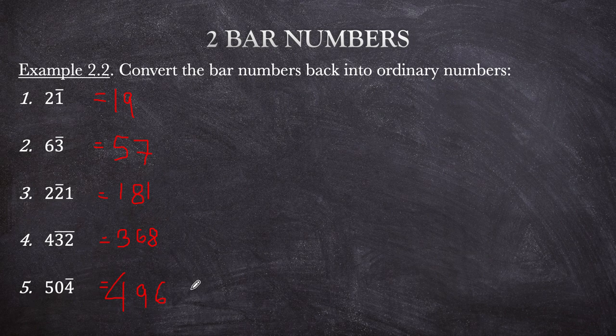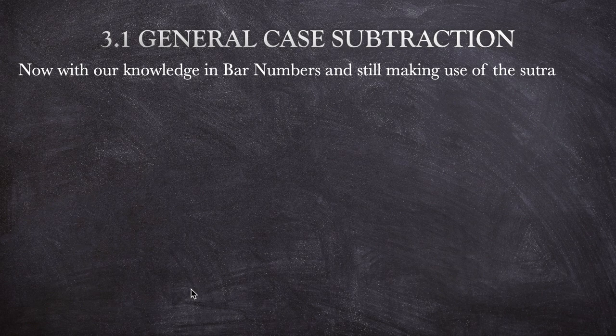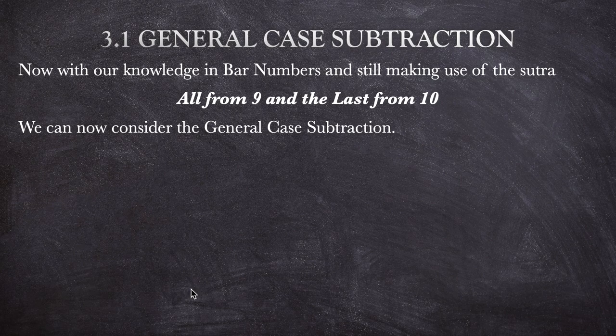In the next section, we're going to have general case subtraction, making use of the bar numbers we've just learned. With our knowledge of bar numbers and the sutra 'all from 9 and the last from 10,' we can now consider general case arithmetic subtraction — subtracting any number from any number using a straight method without carrying.